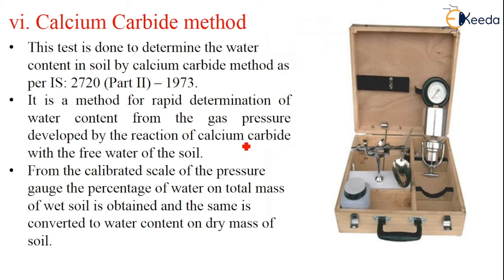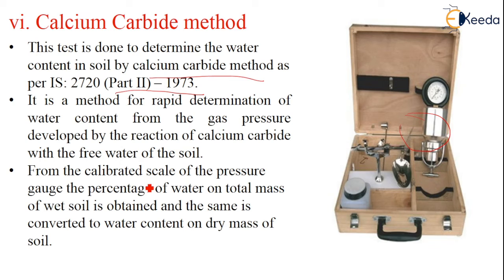The next method is the calcium carbide method. This test is done mainly to determine the water content in soil by the calcium carbide method as per IS 2720 part 2, 1973. It is a method for rapid determination of water content from the gas pressure developed by the reaction of calcium carbide with the free water of the soil. From the calibrated scale of the pressure gauge, the percentage of water on the total mass of wet soil is obtained, and the same is converted to the water content on dry mass of soil.